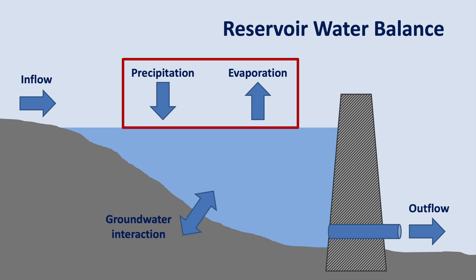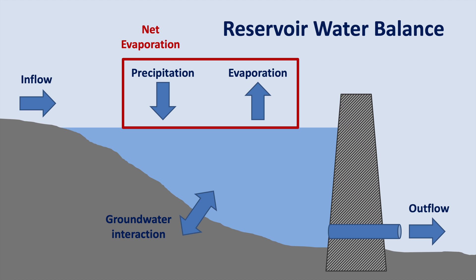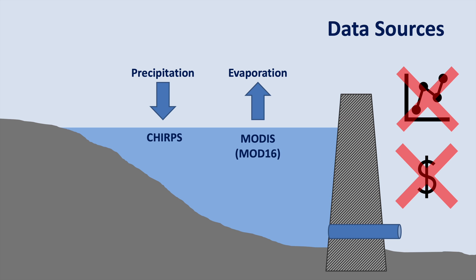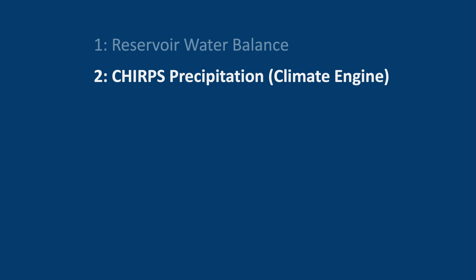There will also be some precipitation which falls directly on the reservoir surface, and this needs to be removed from evaporation in order to estimate the net evaporation. We'll assume that there is no field data available and that we don't have any time or budget to collect new data. We'll get our evaporation data from the MOD16 dataset of MODIS and our precipitation data from the CHIRPS dataset.